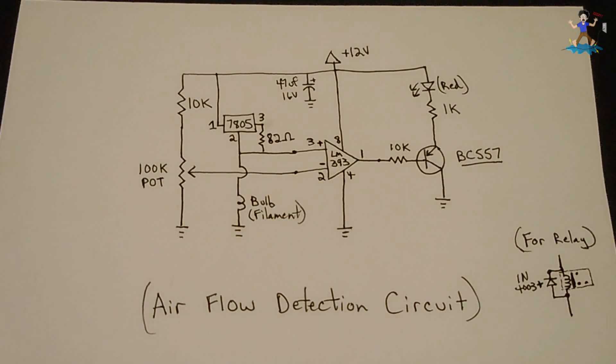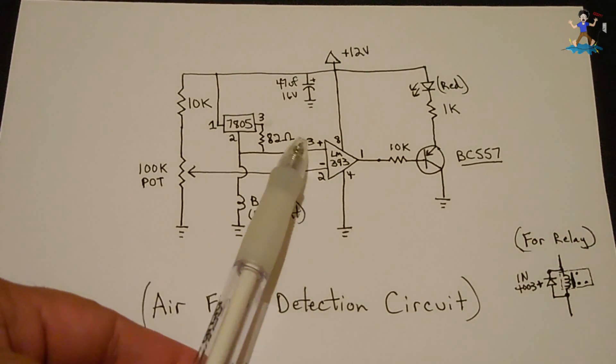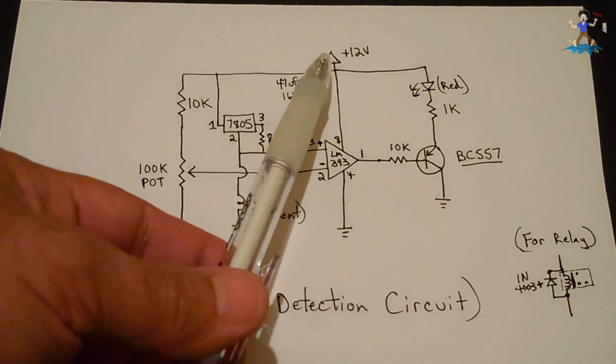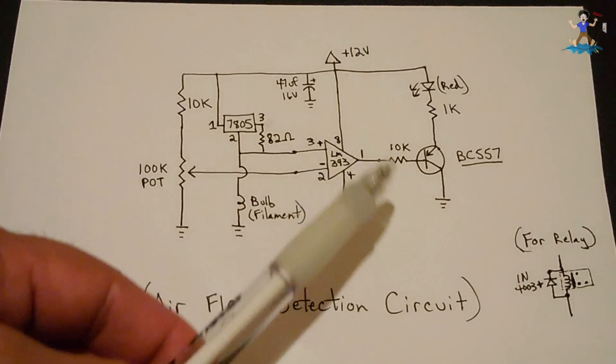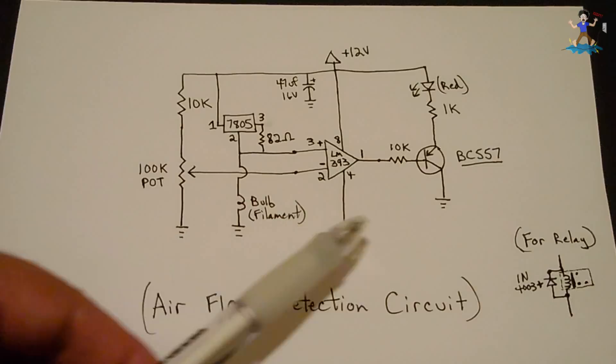Okay, right here is the LM393. Here's all your pinouts: pin 2 is negative, pin 3 is the positive, pin 8 connects to the power rail 12 volts positive, pin 4 battery negative or ground – all these go to battery negative.